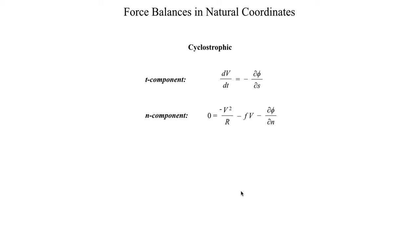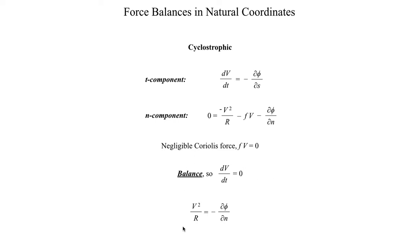Finally, cyclostrophic balance is a balance between the centrifugal force and the pressure gradient force, assuming a negligible Coriolis force. This is a valid assumption on small time or space scales, since Coriolis force is only significant on larger scales. Cyclostrophic balance is also a force balance, meaning the forward acceleration of the air parcel is zero. This distills down to V squared over R equaling the pressure gradient force, with all forces acting 90 degrees to the left or right of the parcel's motion.